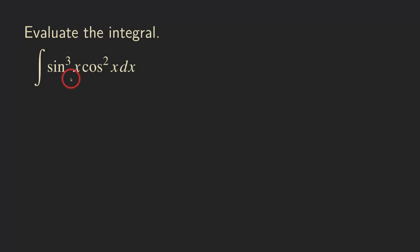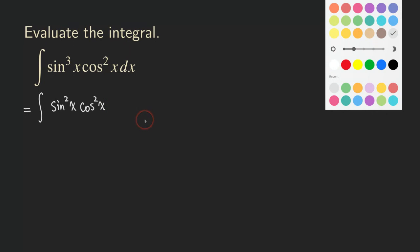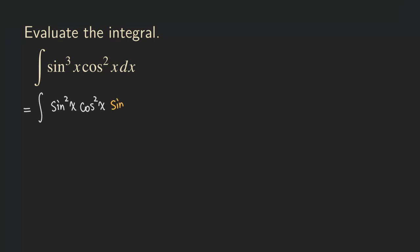We are going to reserve a copy of the sine. What that means is we write it as sine squared of x — taking two copies away from the sine cubed. And then of course there is still the cosine squared in there. The other copy of sine — since there are supposed to be three copies — we are going to put it at the end of the integral. So we now have sine x dx right here.